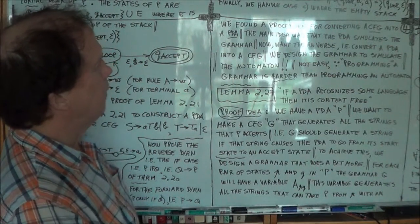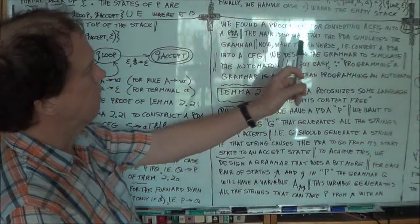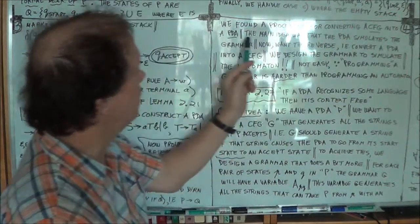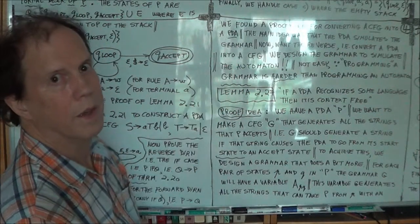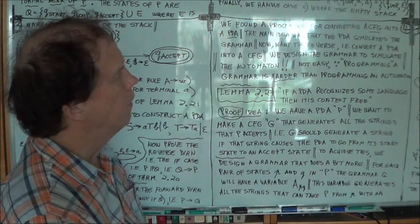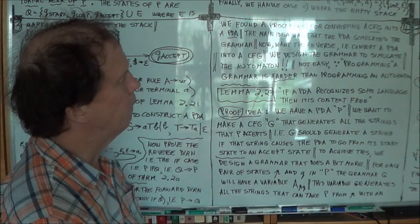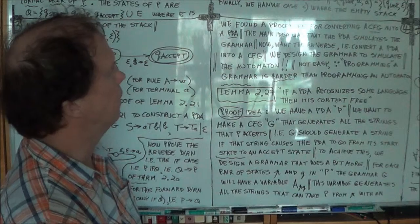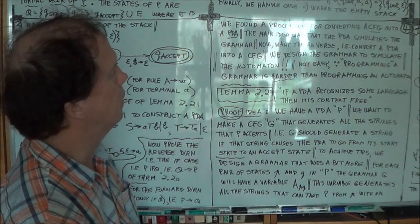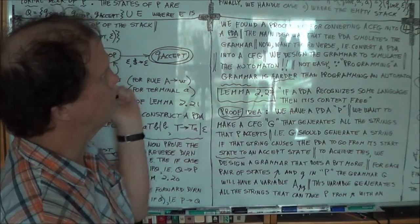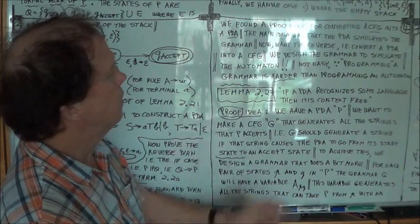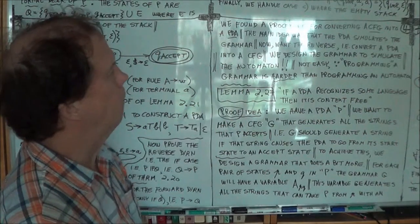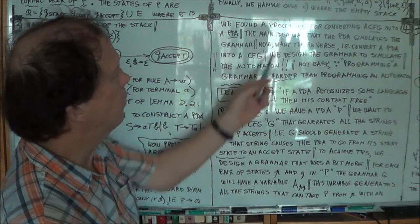What we did, we found a way to convert a grammar into a PDA. We wanted to show that if there's a grammar, there's an equivalent PDA for it. Right? That's what we just finished. And the main idea is, you know, said several times, is that the PDA simulates the grammar. Okay? Now we want to go the other way.